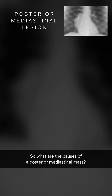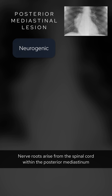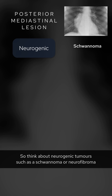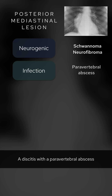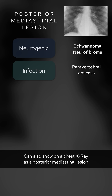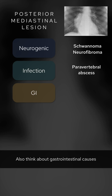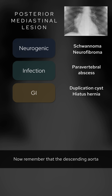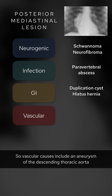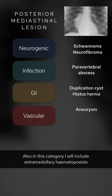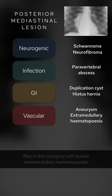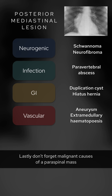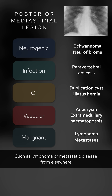So what are the causes of a posterior mediastinal mass? The list is long but let's think about some of the more common causes split into categories. Nerve roots arise from the spinal cord within the posterior mediastinum, so think about neurogenic tumors such as a schwannoma or neurofibroma. A discitis with a paravertebral abscess can also show on a chest x-ray as a posterior mediastinal lesion. Also think about gastrointestinal causes — esophageal duplication cysts, a dilated esophagus, or hiatus hernia. The descending aorta runs in the posterior mediastinum so vascular causes include an aneurysm of the descending thoracic aorta. Also in this category, extramedullary hematopoiesis, where there is production of blood cells outside the bone marrow, can present as paravertebral fat-containing masses. Lastly, don't forget malignant causes such as lymphoma or metastatic disease from elsewhere.